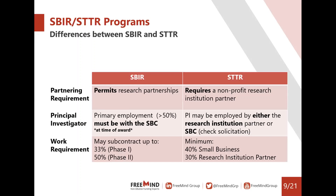In terms of the principal investigator: for the SBIR, the PI's primary employment must be more than 50% with the small business at the time of the award. For the STTR program, the PI can be employed by either the research institution partner or the small business. It's advised to check the solicitation, as some specific solicitations — such as academic-industrial partnerships — may have preferences, but generally the PI can be employed by either.